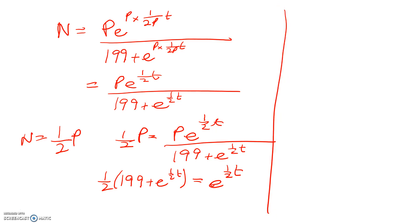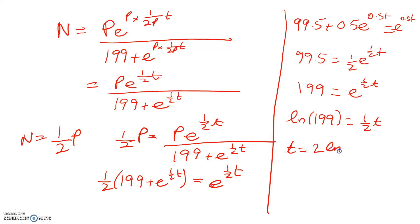So the very last bit is 99.5 plus 0.5 e to the 0.5t equals e to the 0.5t. That gives me 99.5 equals a half e to the half t. We take logs of both sides. So t equals 2 times log of 199. That gives me 10 point something.